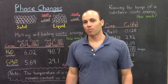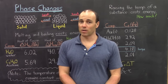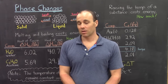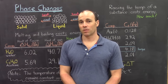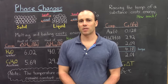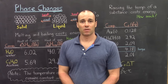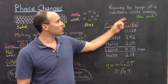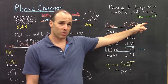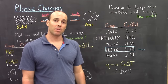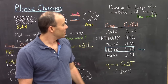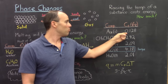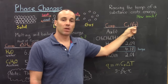In our previous semester of general chemistry — General Chemistry 1 — we did discuss the energy cost to change the temperature of a substance. We did not go through energy costs for changing the phase like we are here, but we did discuss the energy cost to change the temperature of a certain phase of a substance. And when you raise the temperature of a substance, it does cost energy. That's given by the specific heat capacity. Here are the specific heat capacities for several substances — for solid gold, it costs 0.128 joules per gram per degree Celsius.